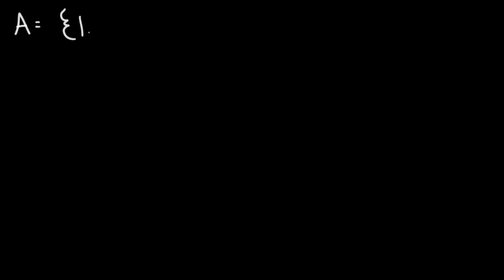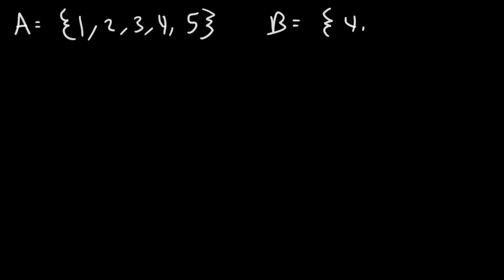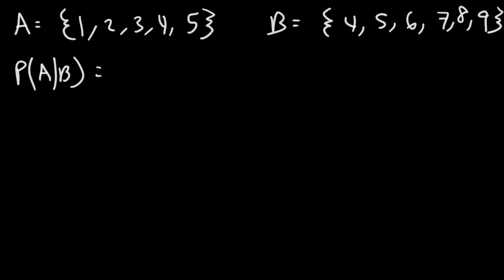Now let's use a simple example to illustrate Bayes' Theorem. Let's say that in a bottle there's a bunch of pieces of paper with numbers on it. Event A represents the numbers 1, 2, 3, 4, and 5 being drawn. Event B represents the numbers 4, 5, 6, 7, 8, and 9. What is the probability of A given B? Let's use Bayes' Theorem to calculate this, even though we don't need to — for educational purposes, let's do it.